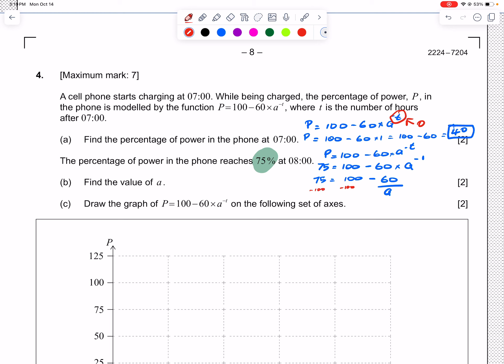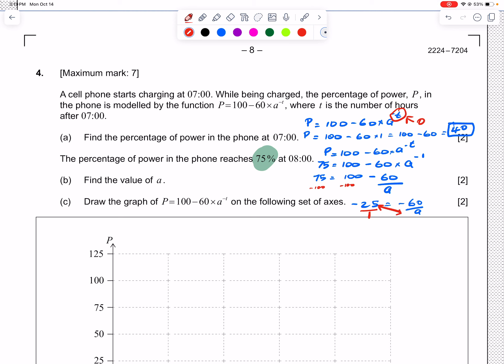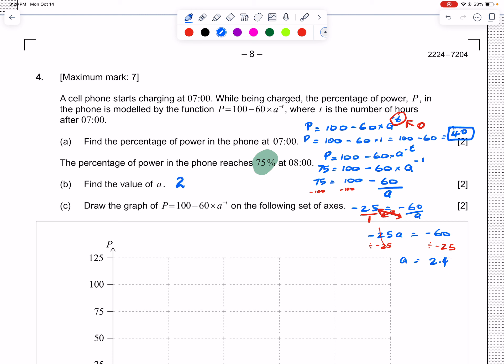Now we can work on isolating that a. The first step is to subtract 100 from both sides and we get -25 = -60/a. We can cross multiply and we get -25a = -60. Our final step is to divide by -25 on both sides, and we get that a = 2.4. That is our answer for part b.